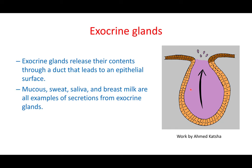Exocrine glands can secrete to an internal or external surface. Examples include the sweat gland, salivary gland, and mucous glands. Endocrine glands include the pancreas, adrenal gland, and thyroid gland. In this chapter, we will talk about endocrine glands only — we will not cover exocrine glands here.